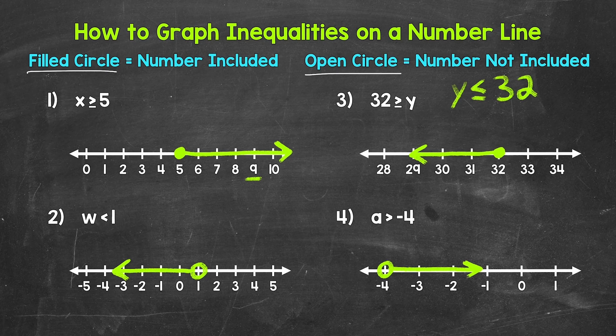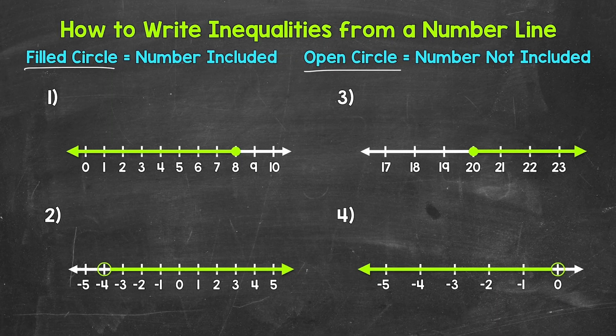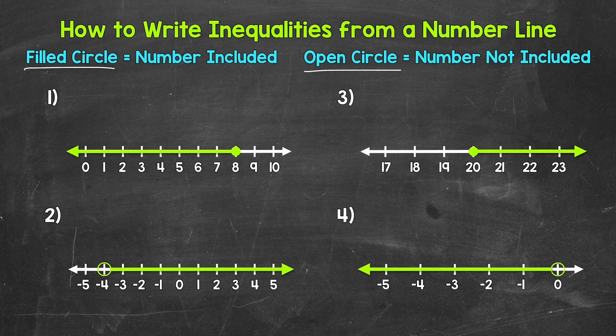So there's how to graph inequalities on a number line. Let's move on to writing inequalities. For number one, we have a filled circle at eight. Remember, a filled circle means that the number is included — it's a solution. An open circle means the number is not included — it's not a solution. So we have a filled circle at eight, and then an arrow pointing left towards all of the numbers less than eight. That means eight and all of the numbers less than eight are solutions.